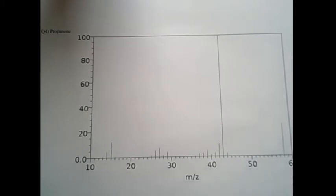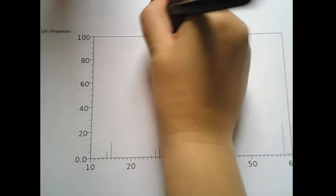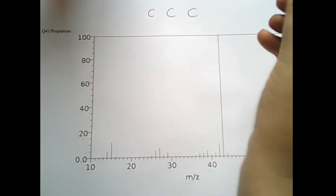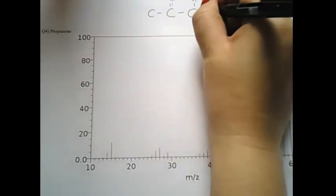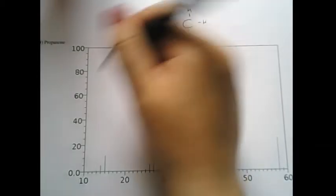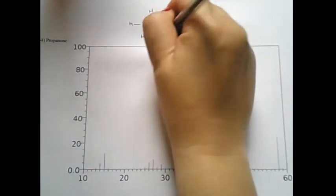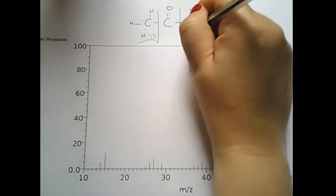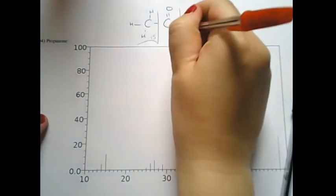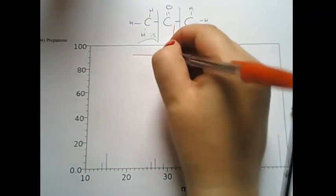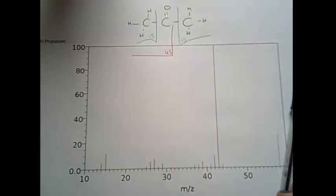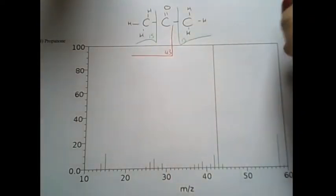Propanone. I think we did propanone in lesson anyway. Prop one, two, three. Anone means it's a ketone. So there it is in the middle. Fill up the rest with hydrogens. So we've got 15 there, 15 there. Or we can have 15 plus 12 plus 16. But that section would be your 43. To label the key bits here, relative formula mass of this is going to be the 43 plus the 15.